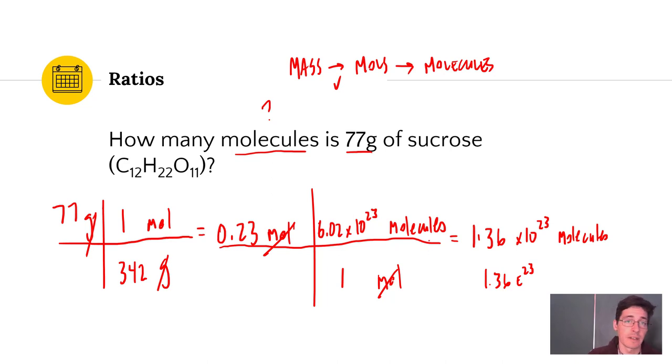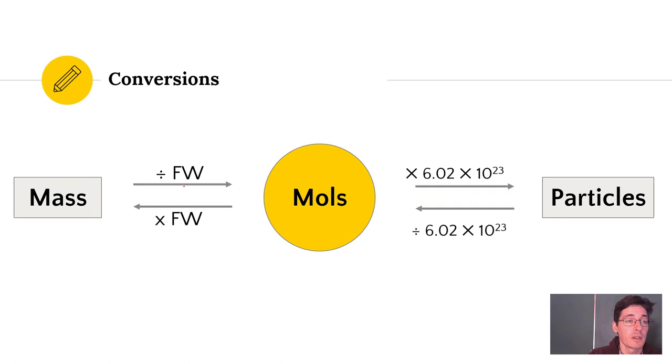And that's dimensional analysis. Using ratios to convert from one quantity to another using conversion factors. Going from mass to moles, you use a formula weight here. Going from moles to particles, you use Avogadro's number here.